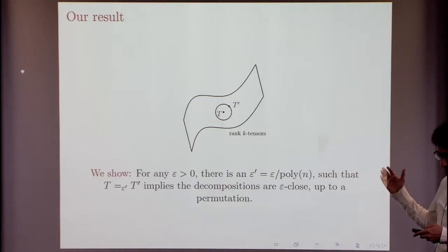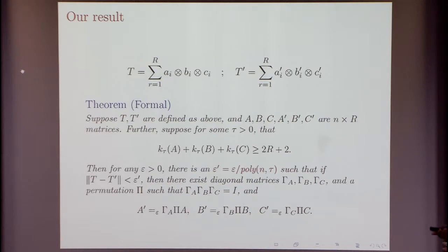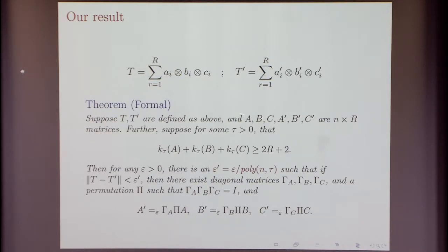This is the main gist of our theorem. Stated formally: you have two tensors T and T', both rank K, known to be ε'-close. The hypothesis is that the original tensor T has a decomposition satisfying Kruskal's condition: K(A) + K(B) + K(C) > 2R+2. Then any other tensor close to this tensor has a decomposition that is also close.